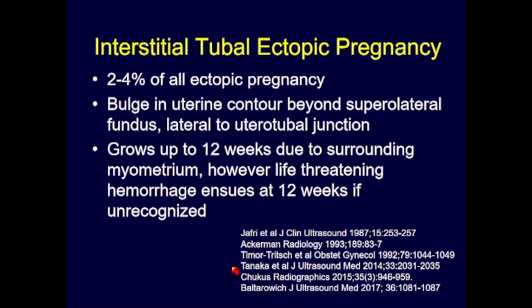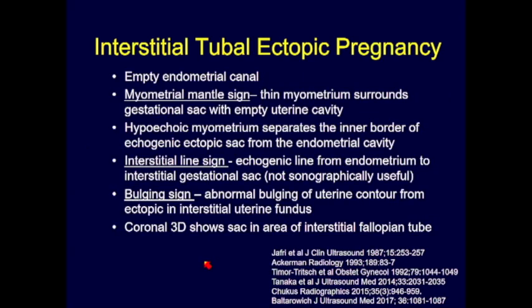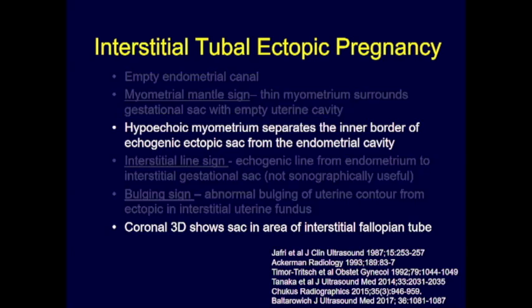Interstitial tubal ectopic is 2–4% of all ectopic pregnancies. The pregnancy results in a bulge in the uterine contour lateral to the utero-tubal junction and can grow to 12 weeks due to surrounding myometrium, but leads to life-threatening hemorrhage if it ruptures undetected. Key signs include an empty endometrial canal, myometrial mantle sign, interstitial line sign, and bulging sign. The most helpful findings are the hypoechoic myometrium separating the echogenic ectopic sac from the endometrial cavity, and the coronal 3D view showing exact sac location. Surgical management is typically used rather than methotrexate.